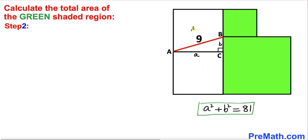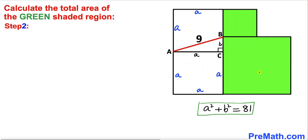Let's focus on these two identical squares. Since they are identical squares, all these sides are equal in length. Just keep that in mind — we know that this side length is A, so that means all of these side lengths are going to be A as well.